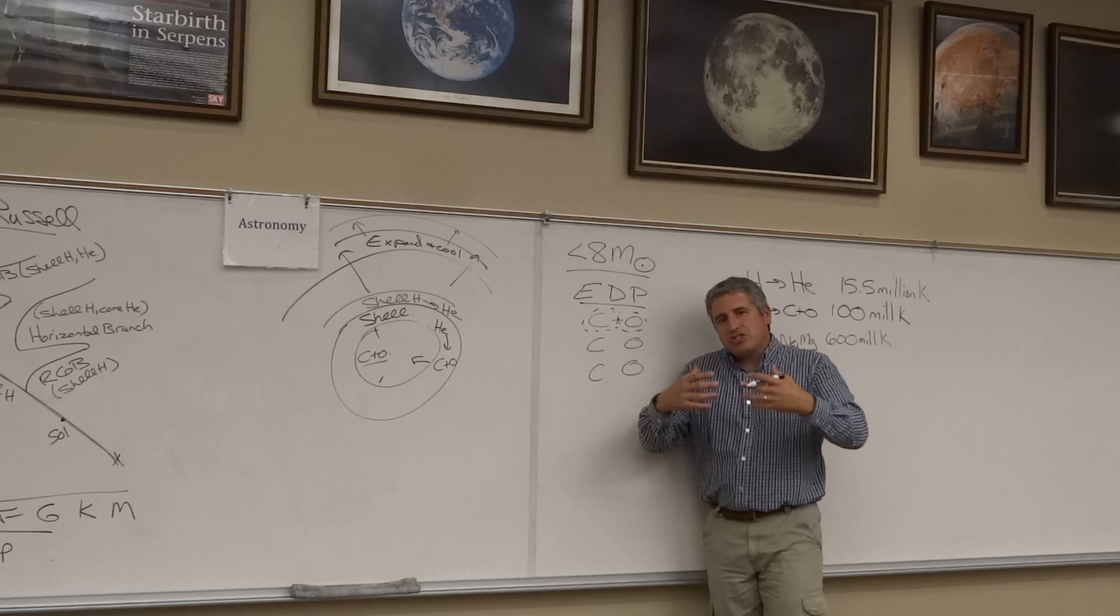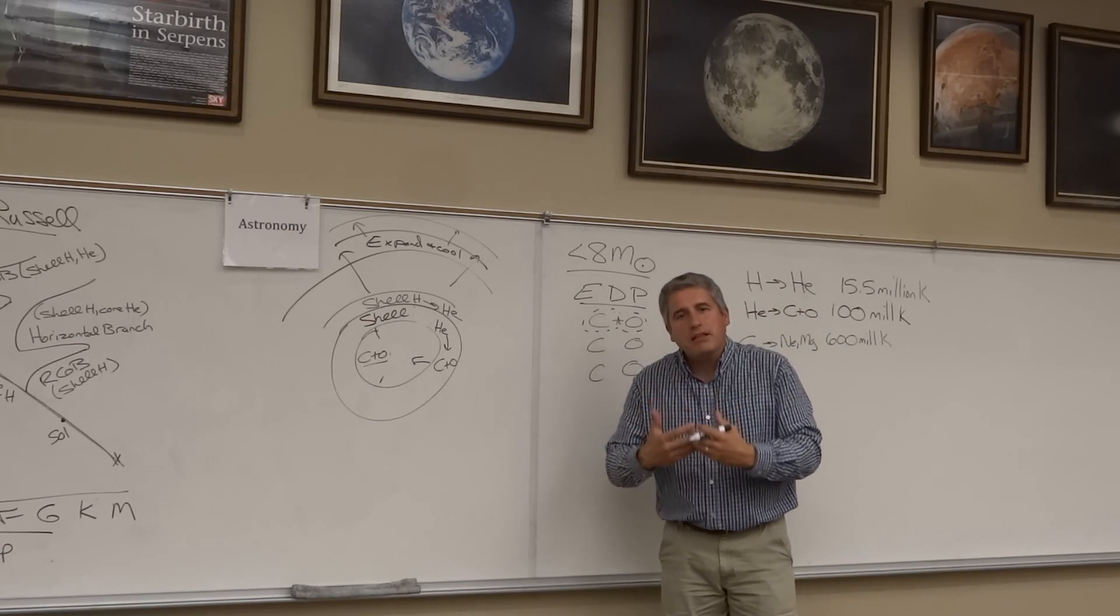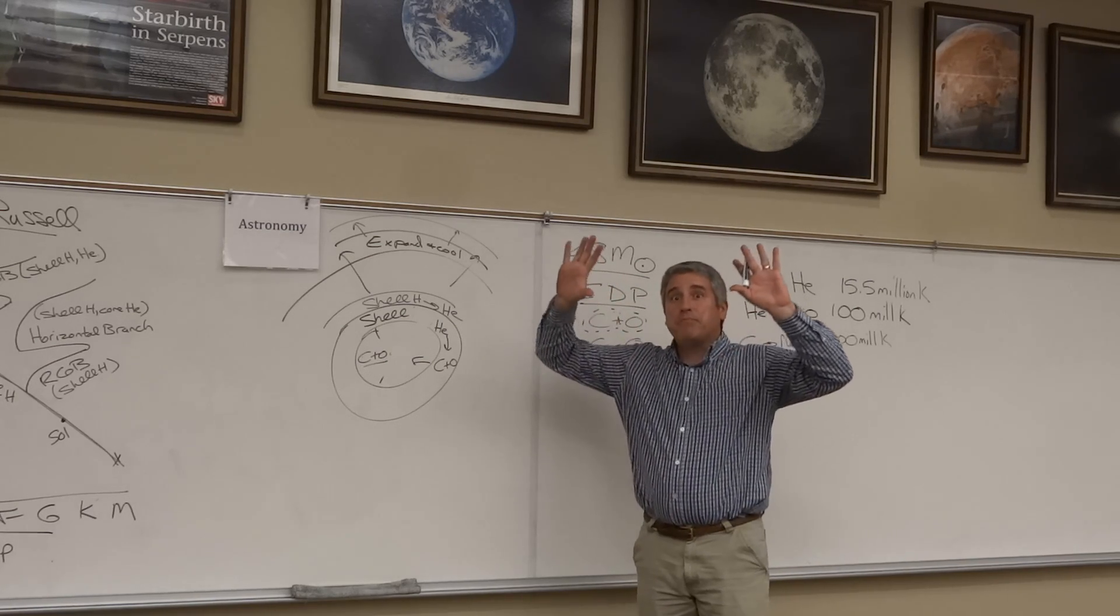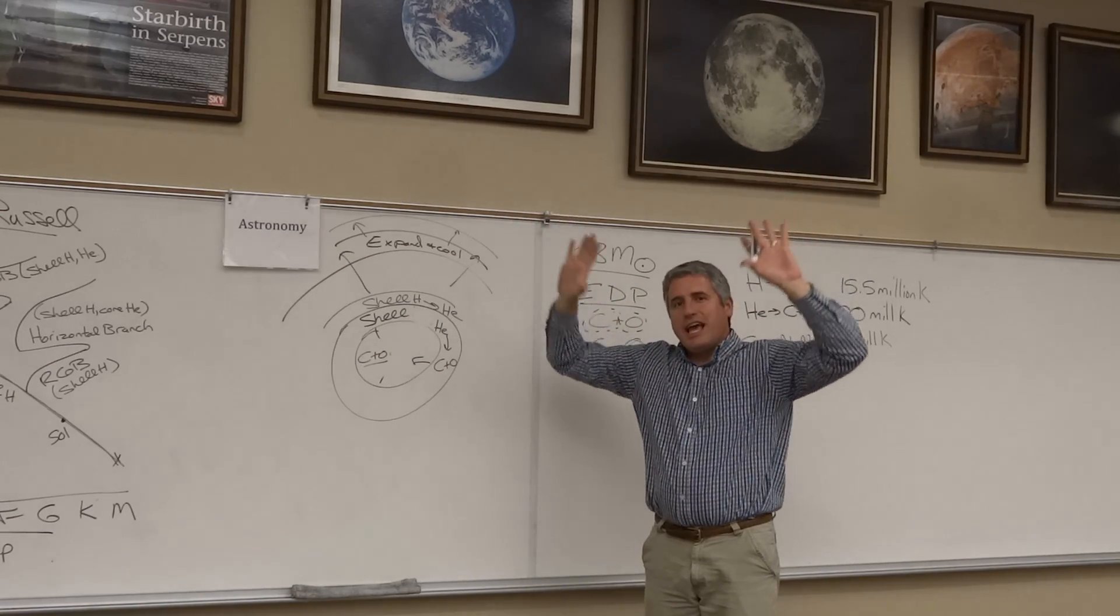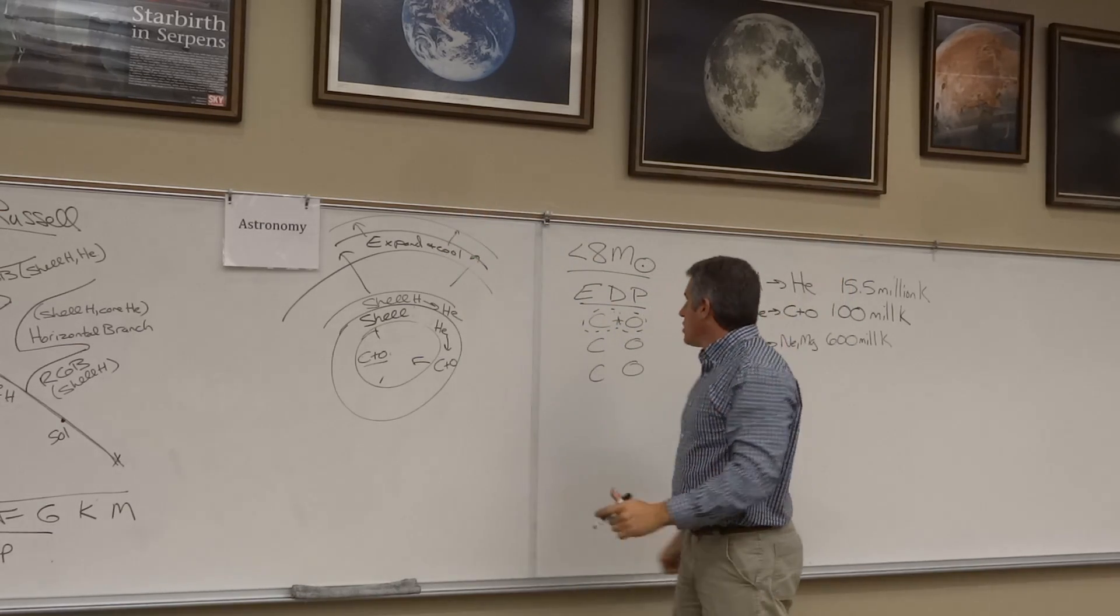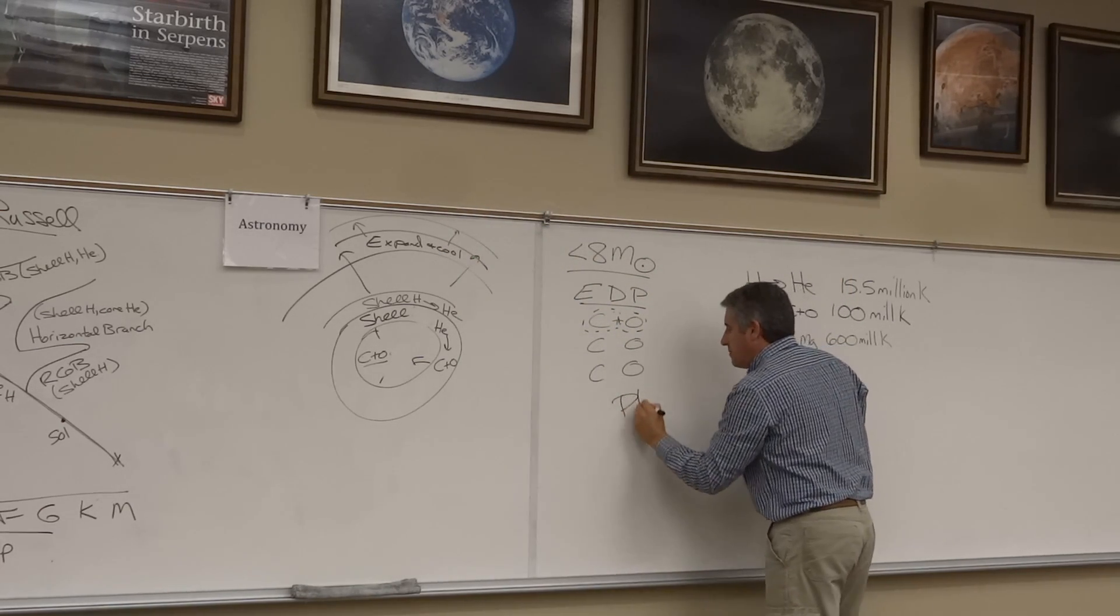The electrons actually refuse to get any closer together. They repel each other and they create a situation where the outer layers keep getting pushed out by the shells, and they sort of expand out forming a diffuse cloud of material called a planetary nebula.